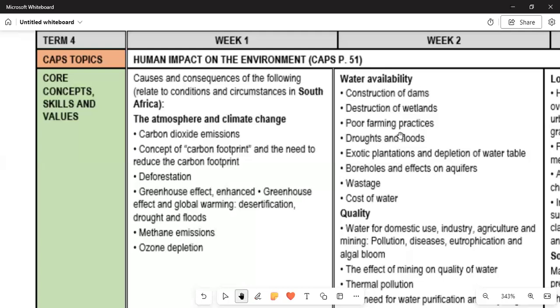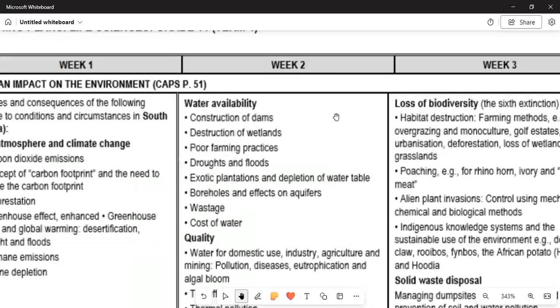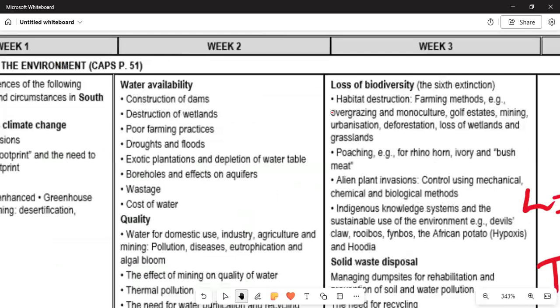In the second week, we talk about water availability: how to construct dams, destruction of wetlands, poor farming practices, droughts and floods, exotic plants and depletion of water table, boreholes and effects on aquifers, wastage, and cost of water.